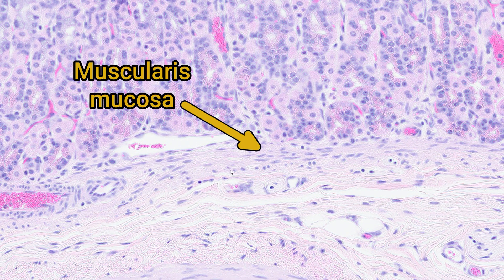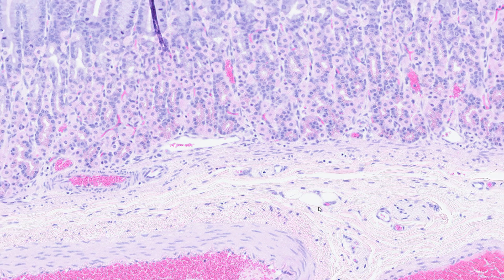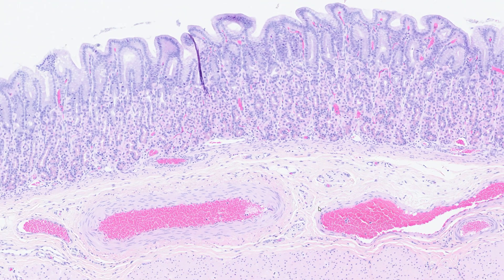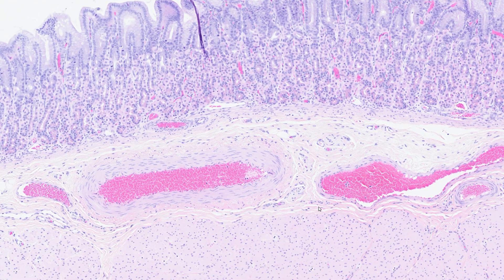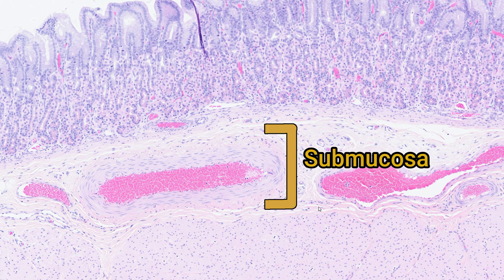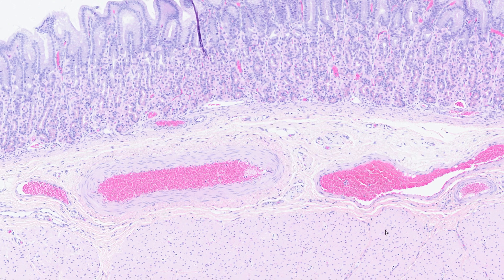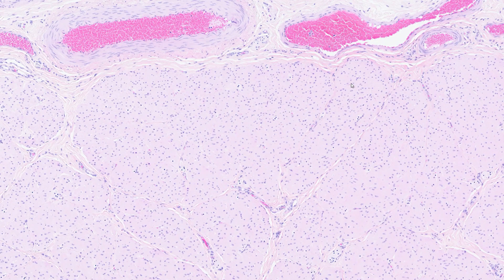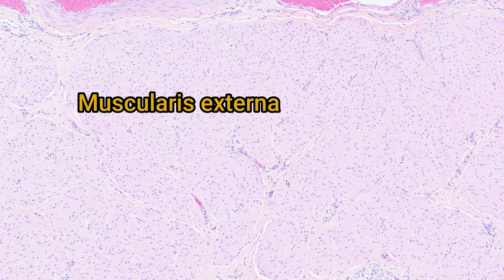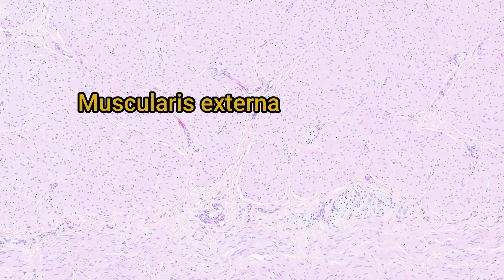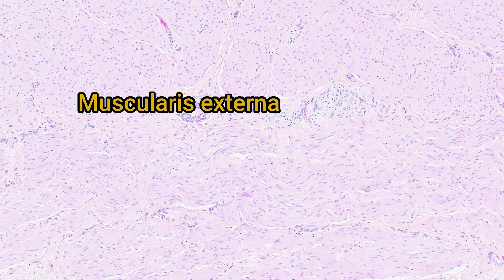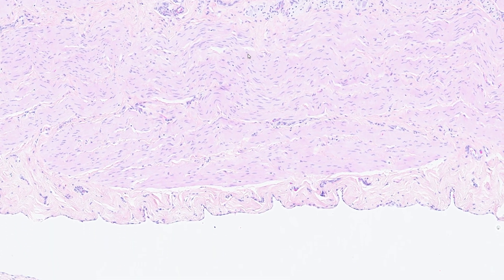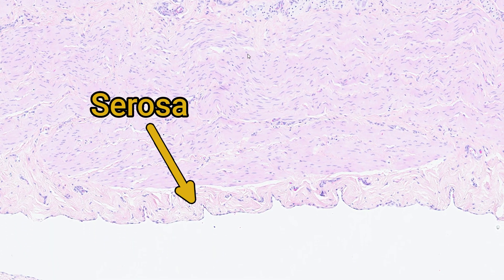This is the muscularis mucosa, which forms an anatomic boundary between the mucosa and the submucosa. The submucosa is formed of connective tissue containing blood vessels, lymphatics, nerves and ganglia. You might also find some lymphoid tissue in some sections. Heading further out we hit some layers of smooth muscle — these are the muscularis externa, which also has two parts to it. The final layer is the serosa, formed of a small amount of connective tissue and a mesothelial lining.